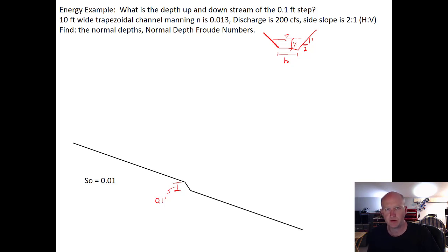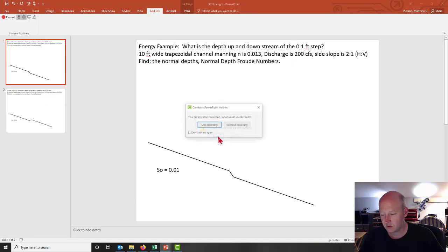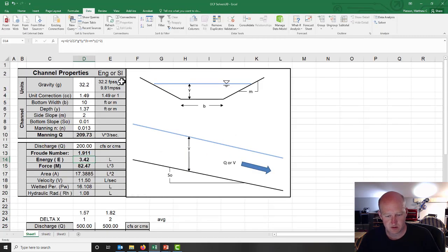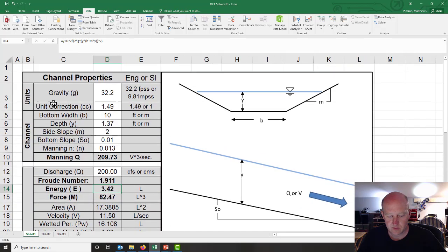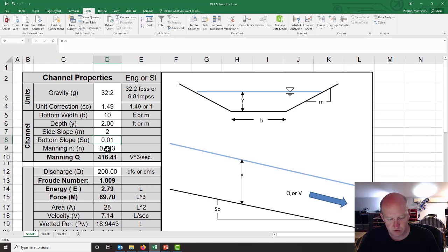On any of these problems, the first thing we want to do is find normal depth and critical depth and get the energies for both of those. We'll go to our Excel spreadsheet and plug in all the information: bottom width, side slope, bottom slope, Manning's roughness coefficient, and flow rate.